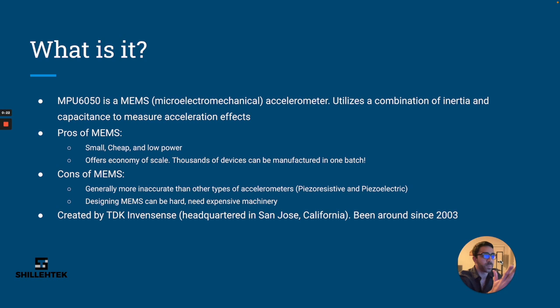Some pros of MEMS is that they're small, cheap, and low power. The MPU6050 is famous for being small, cheap, and low power - that's what they market it as. Also, producing MEMS offers economy of scale. Due to the nature of MEMS, you can actually manufacture thousands of devices in one batch, which makes the scaling of MEMS really nice for companies.